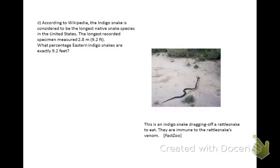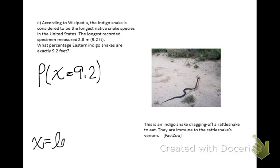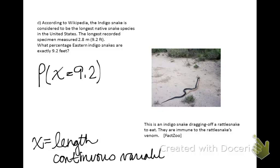According to Wikipedia, the indigo snake is considered the longest native snake species in the United States. The longest recorded specimen measured 2.8 meters, which is 9.2 feet. What percentage of eastern indigo snakes are exactly 9.2 feet? Length is a continuous variable, and all continuous variables are exactly equal to a number with probability 0. By the way, did you know that indigo snakes are immune to rattlesnake venom?